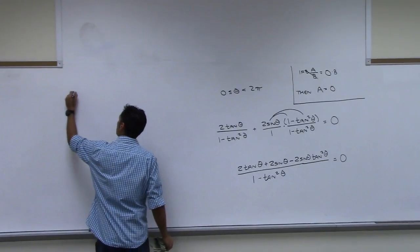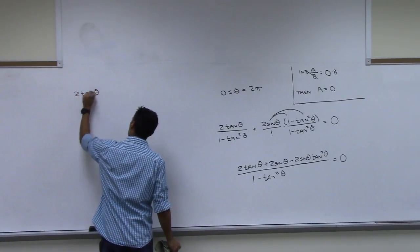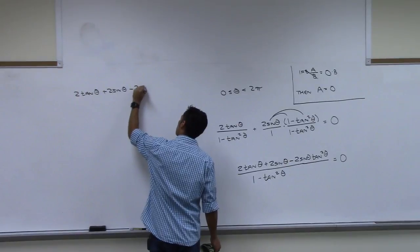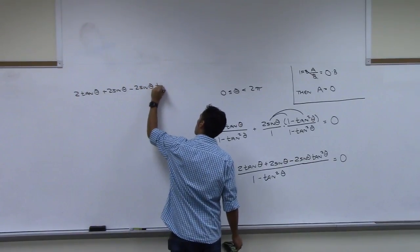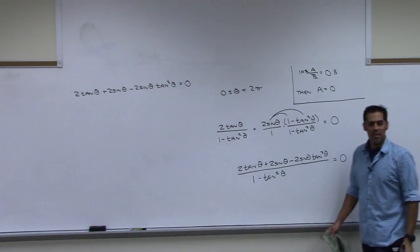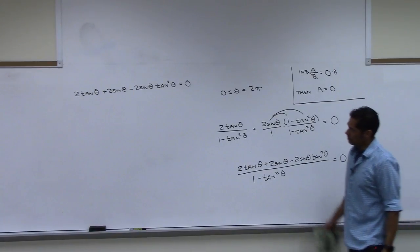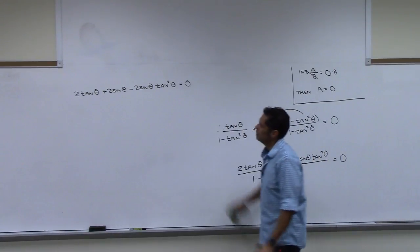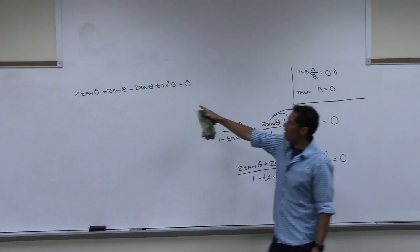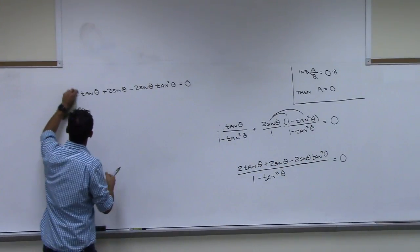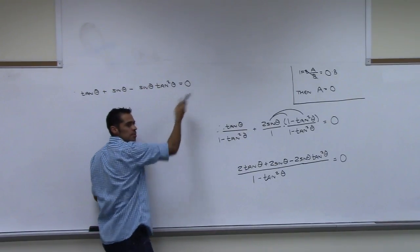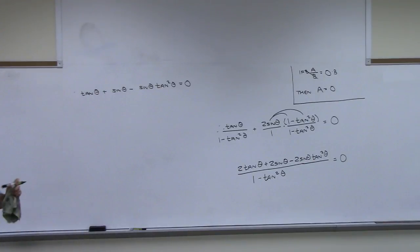Setting the numerator equal to zero: two tan θ plus two sine θ minus two sine θ tan²θ equals zero. Everything has a factor of two, so we divide it out, leaving tan θ plus sine θ minus sine θ tan²θ equals zero.